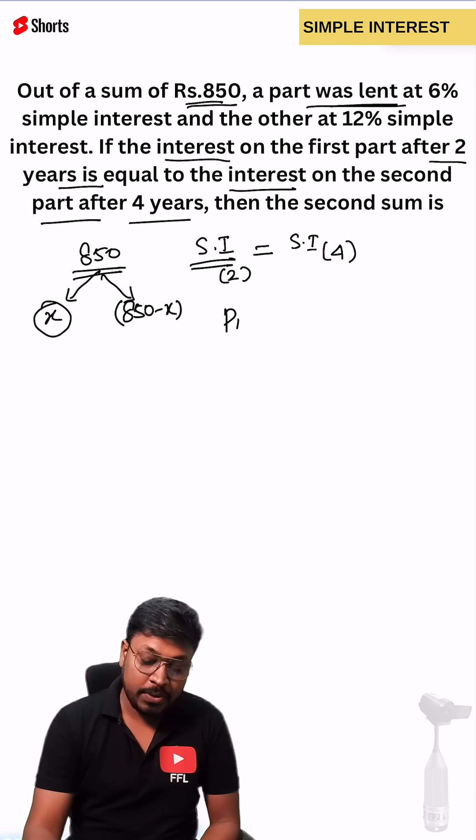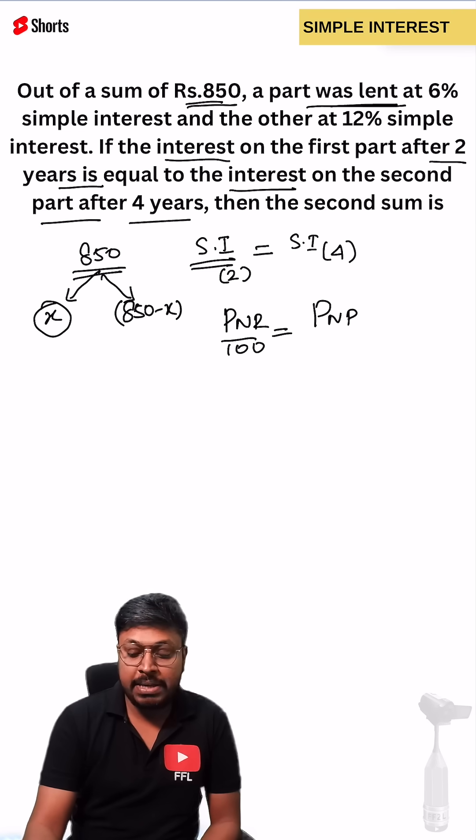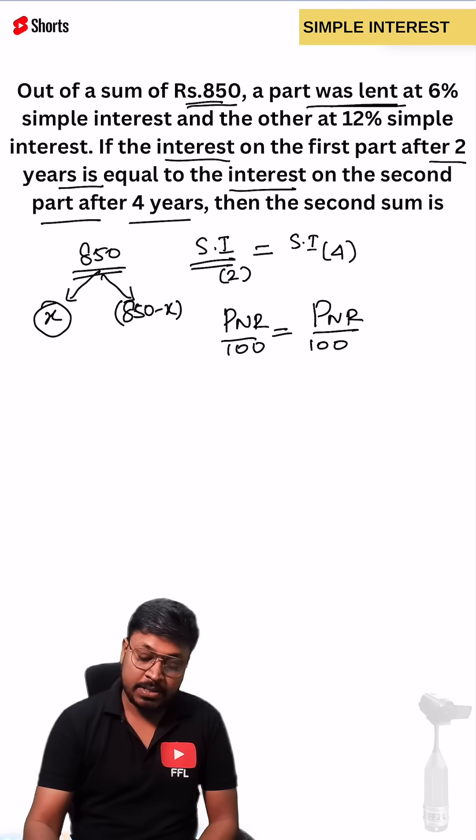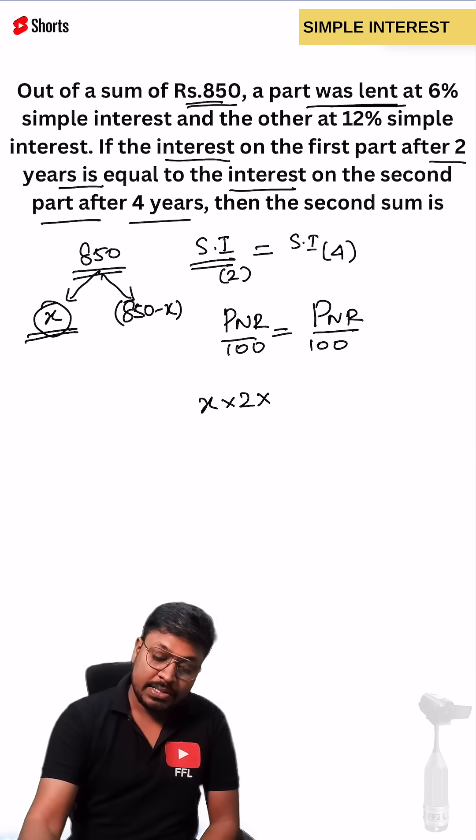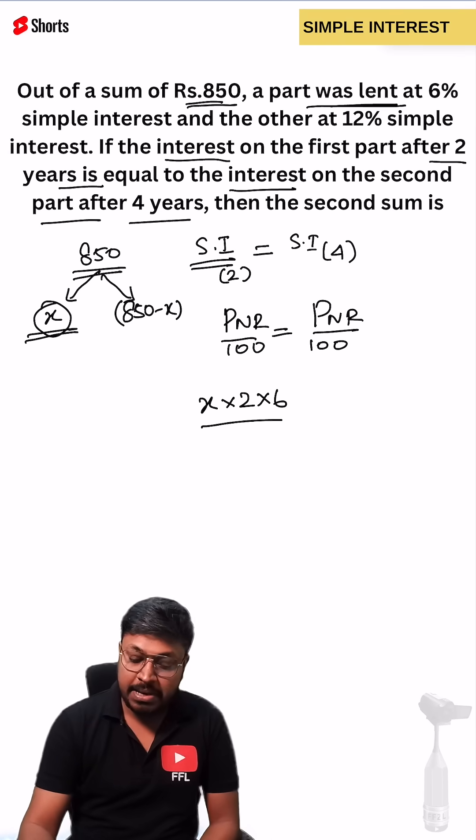Simple interest formula we know is PNR divided by 100. So second simple interest is also PNR divided by 100. First principle we can take as x, number of years is 2. What about the rate of interest? The rate of interest is 6 divided by 100.